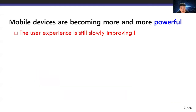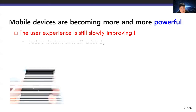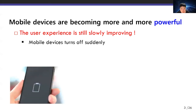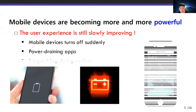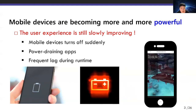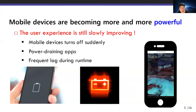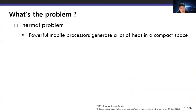However, users still complain of inconvenience. They often say: my smartphone sometimes turns off suddenly, the battery drains very quickly when using certain apps. So what's the problem? Why cannot we fully utilize the powerful mobile processors?